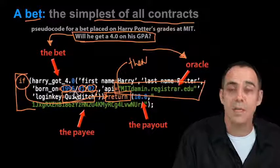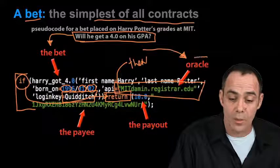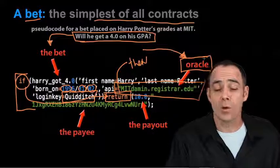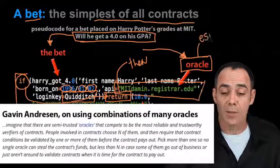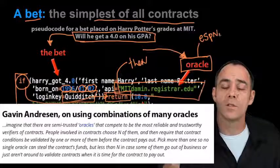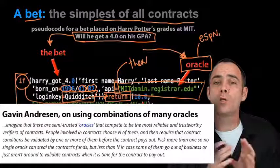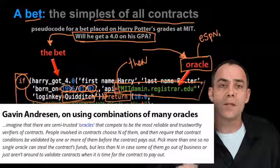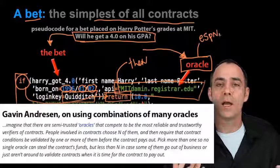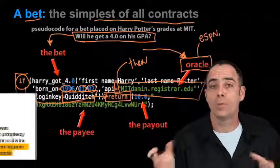So the Oracle in this case would just be MIT, but you could see the Oracle being ESPN in a sports event, or thousands of things. If you don't want to trust just one centralized party like ESPN, you could load up all the sporting sites and have individuals acting as Oracles providing information online. Then you would take the majority of them — 95% or even all of them — whatever you want to put in your bet as the form of agreement.